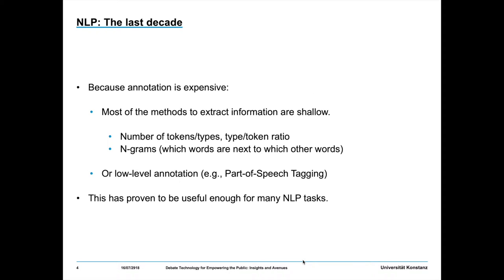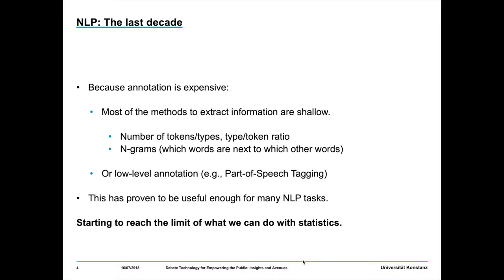Because annotation is expensive, most of the methods used to extract information are shallow — features like type-token ratio, anagrams, or low-level annotation like parts of speech. This has proven useful for many NLP tasks, but we're starting to reach the limit of what we can do with statistics.